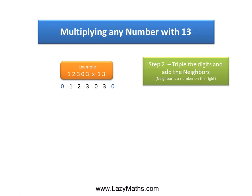The next step is to start tripling the digits starting from the right side and adding it to its neighbor, the neighbor being the one on the right.